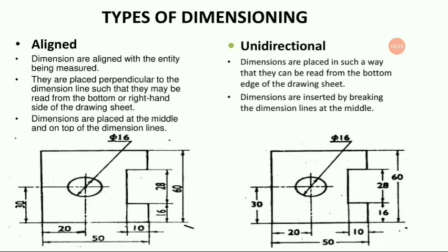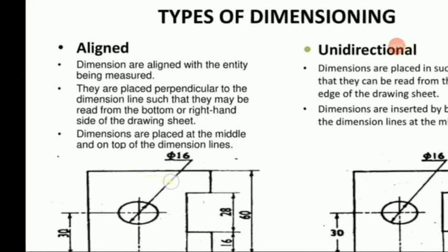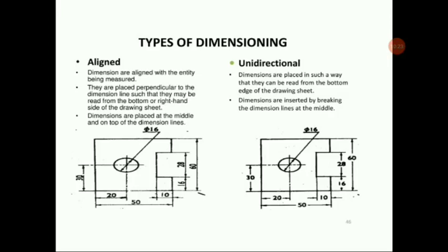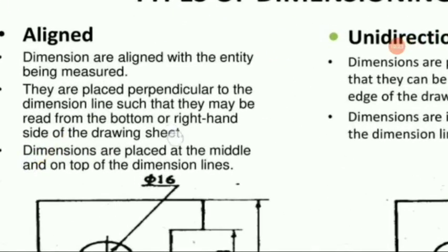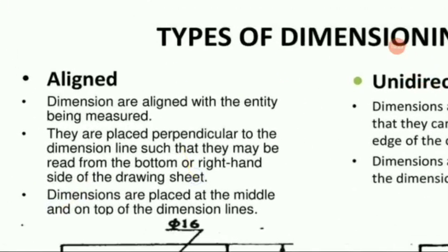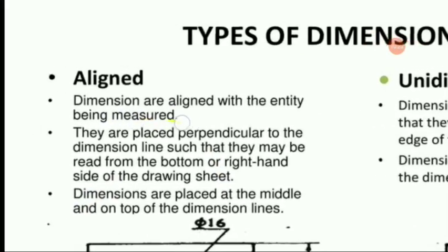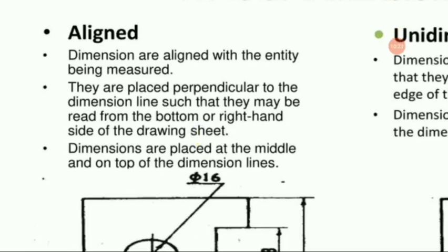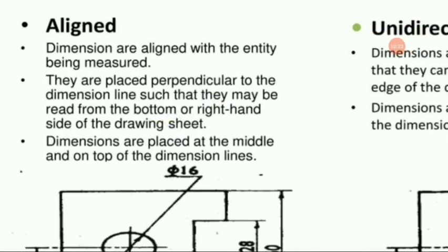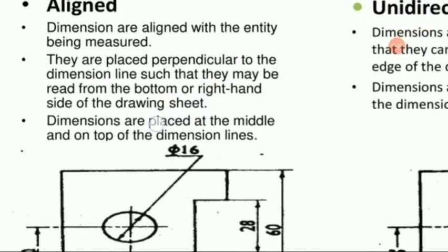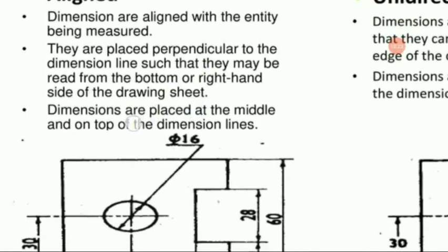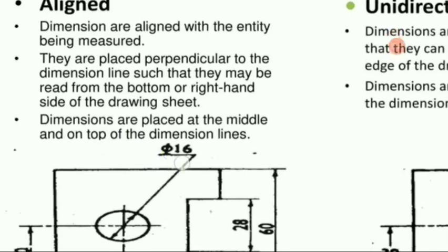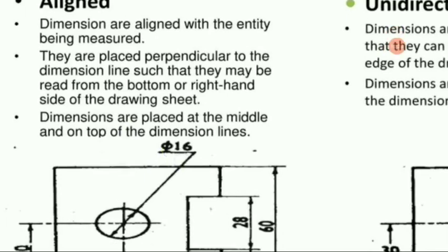In types of dimensioning, we have two systems. One is the aligned dimensioning system and the other is the unidirectional dimensioning system. In the aligned system, dimensions are aligned with the entity being measured and placed perpendicular to the dimension lines, such that they may be read from the bottom or right-hand side of the drawing. These points are very important for exam purposes.